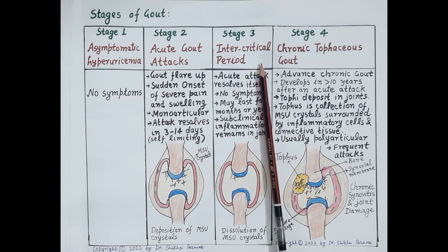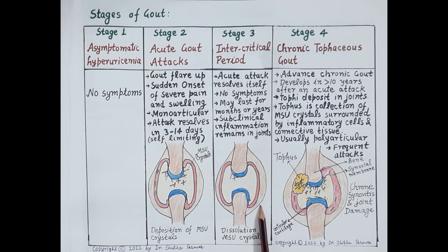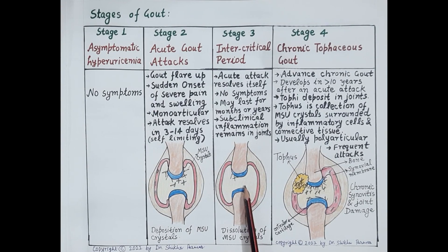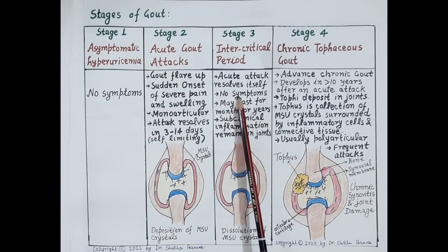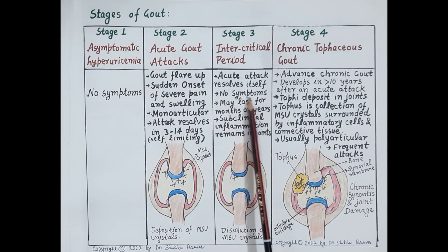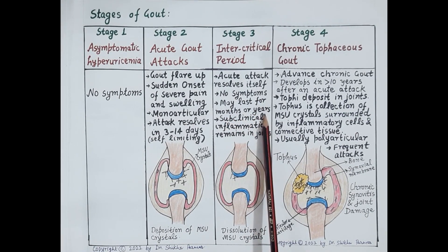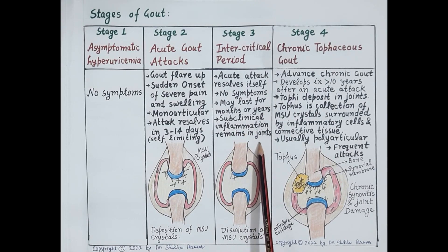Stage three is the intercritical period. The acute attack resolves on its own as the monosodium urate crystals are removed by phagocytosis induced by immune cells of the body. The patient is now in the intercritical stage. Since monosodium urate crystals are no longer present, no symptoms are seen, and this period may last for months to years. The disease seems inactive, but as blood uric acid levels are still high, subclinical inflammation remains in the joints.